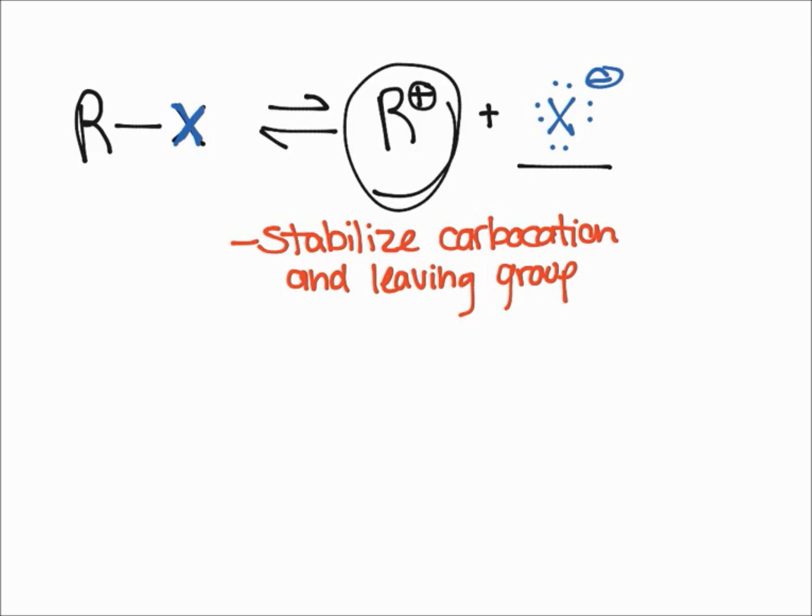If you stabilize the carbocation and leaving group, that's going to push the equilibrium to form more of the carbocation and leaving group. And so that's going to make the reaction go faster.